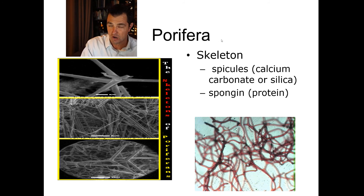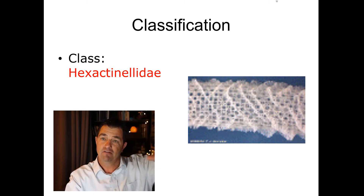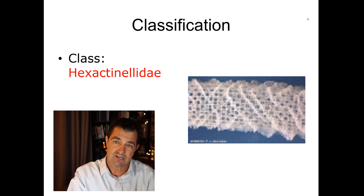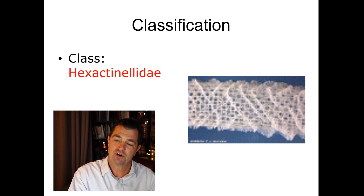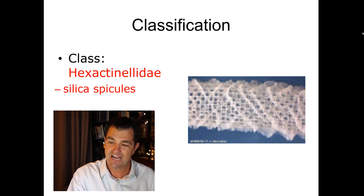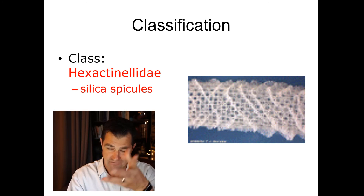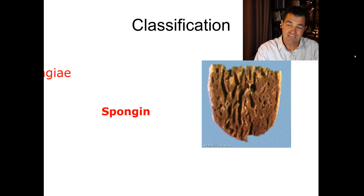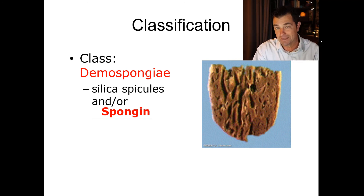There are several classes of sponges within Kingdom Animalia, Phylum Porifera. The first class is Hexactinellida — the glass sponges — which have silica spicules; when the organism dies, what remains is an intricate pattern of these glass spicules. The other class we'll cover is Demospongia, which have silica spicules or, commonly, no spicules but instead abundant spongin protein throughout.